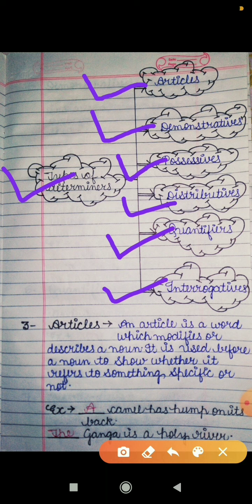First we will discuss articles. As you already know, 'a' and 'the' are called articles. An article is a word which modifies or describes a noun. It is used before a noun to show whether it refers to something specific or not. As I already told you, all determiners are used before a noun, and article is also a kind of determiner, so it is used before a noun.